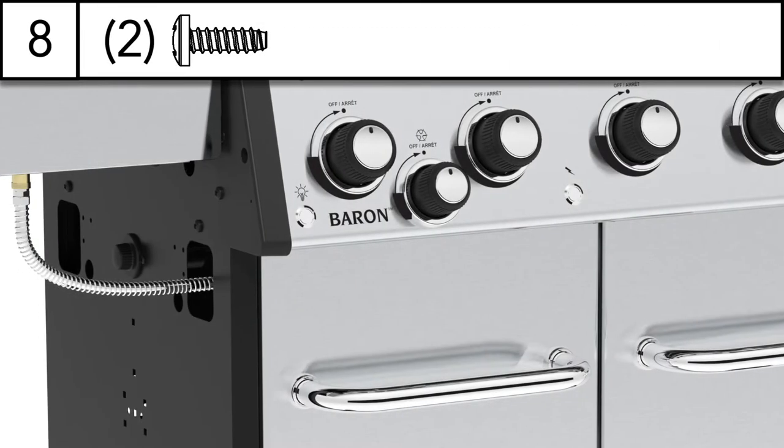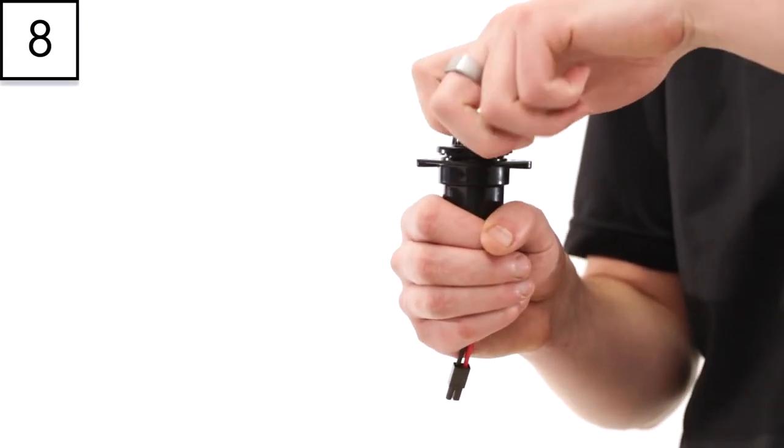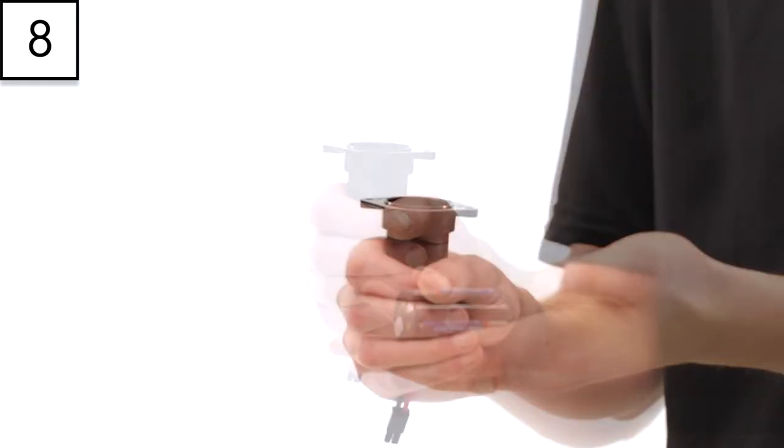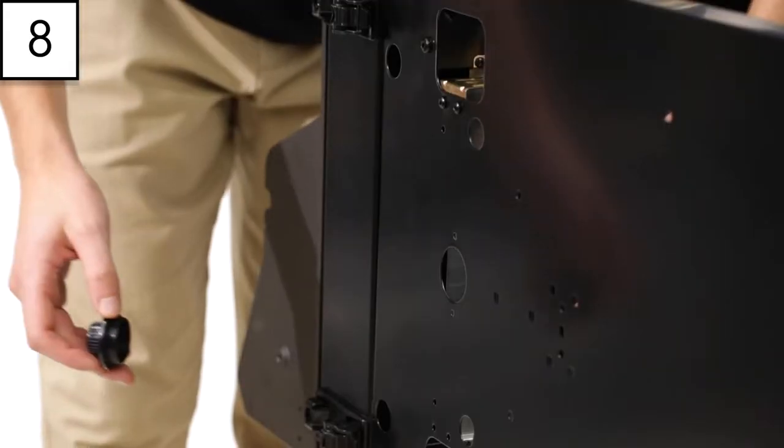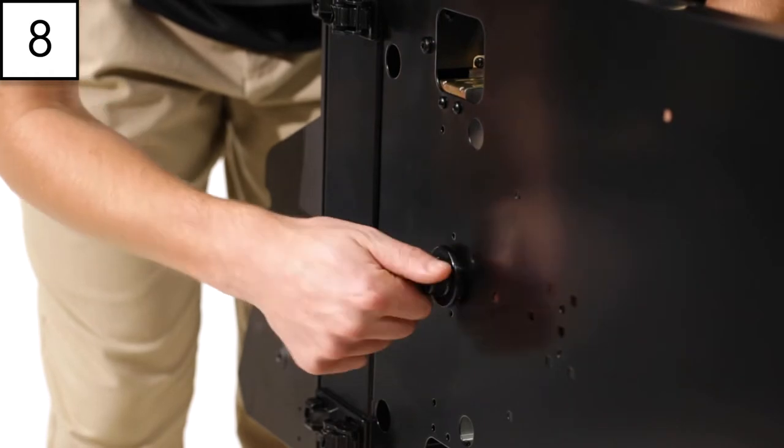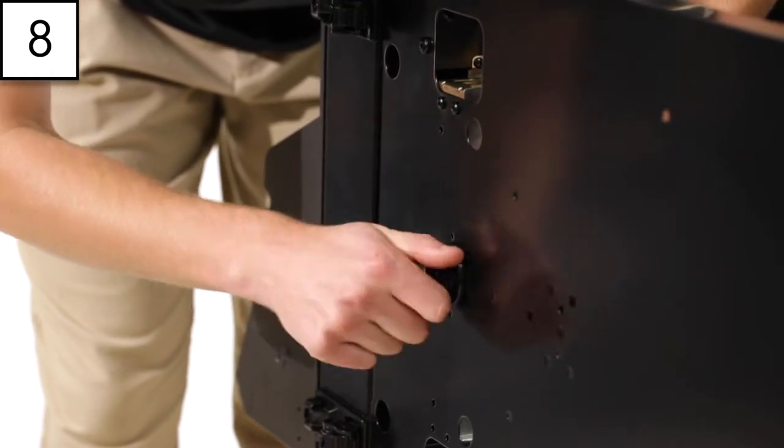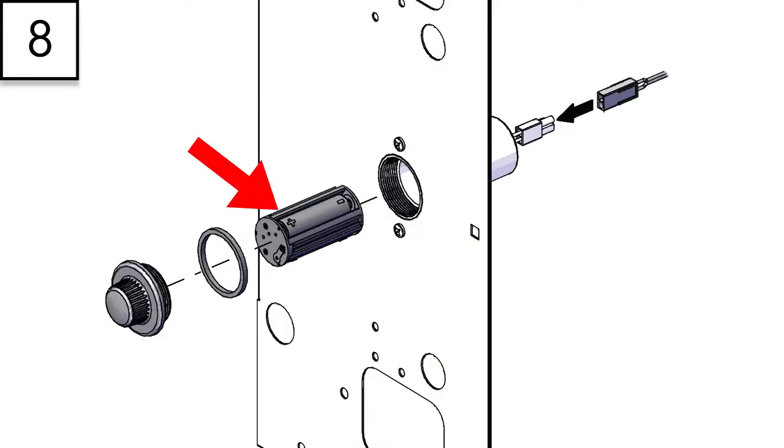Step 8. Install the battery pack. Begin by unscrewing the battery pack cap, install three batteries into the battery pack, then insert and secure the cap. Please note the positive terminal and negative terminal markings throughout.